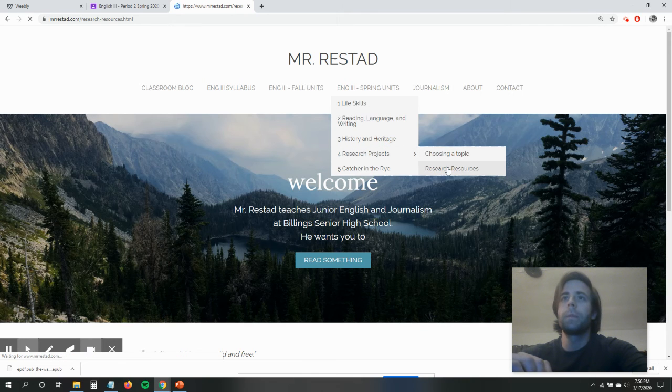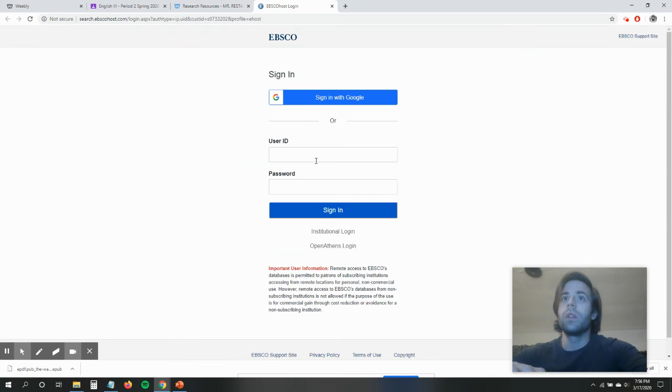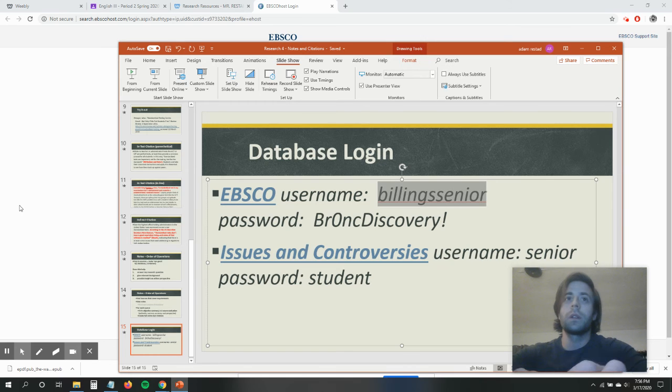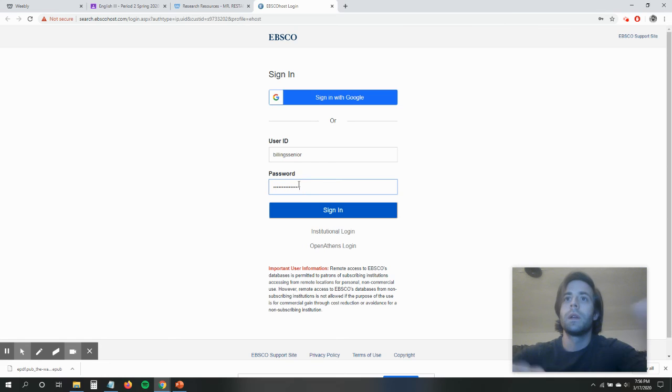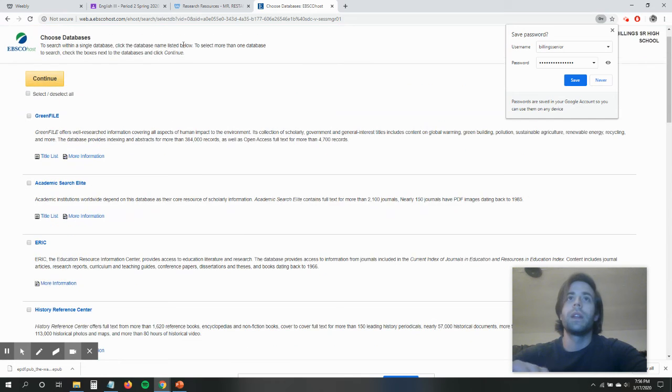On mrstead.com, you look at research projects and research resources. I have these links over here. The two that I'm gonna really recommend you use are EBSCO hosting, issues and controversies. If we open this up, you're gonna notice you got a login. That's okay. You can just copy these guys in here. I'd recommend copying and pasting it. This works, and there we go. I'm at home and I'm logged into our databases. Should be just fine.